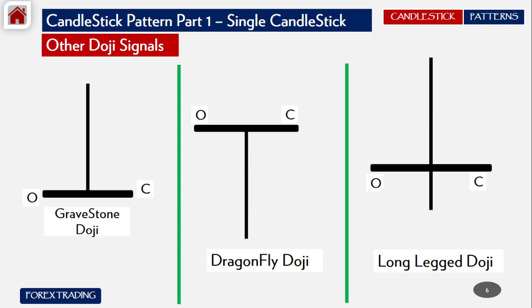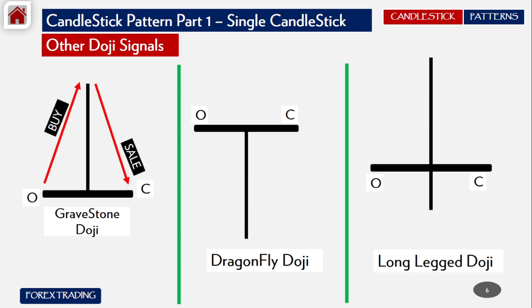For the Gravestone Doji, the price opens and closes at the bottom. The price opens, buyers take it to the top of the upper wick, and then sellers take the price down to the same level where it had opened. Its impact will be downwards if the price keeps on moving.